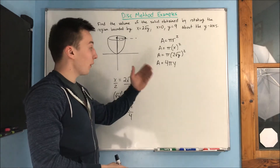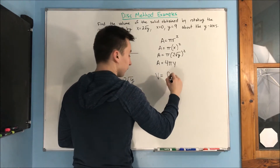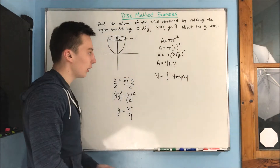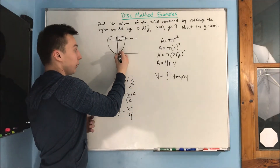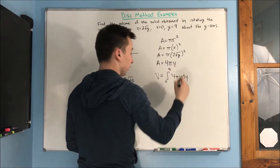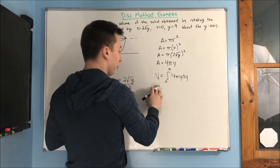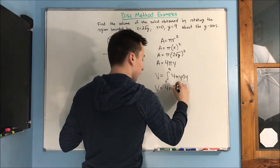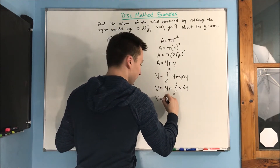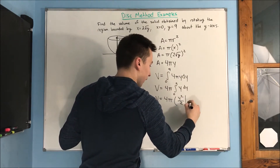Now that we have found our area, we find our volume. Volume is given by the integral of 4 pi y dy. Our bounds go from the bottom y point, which is 0, to the top y point at y equals 9. We can pull the 4 pi out, so volume equals 4 pi times the integral from 0 to 9 of y dy, which gives us 4 pi times y squared over 2, evaluated from 0 to 9.